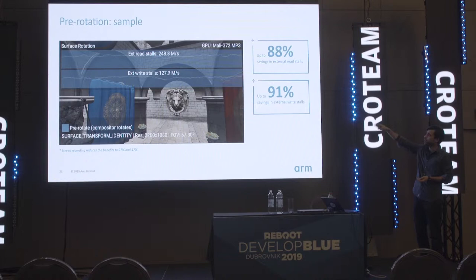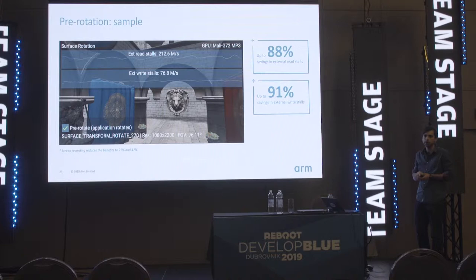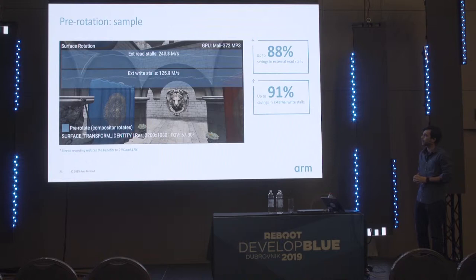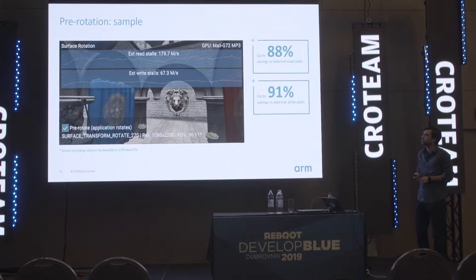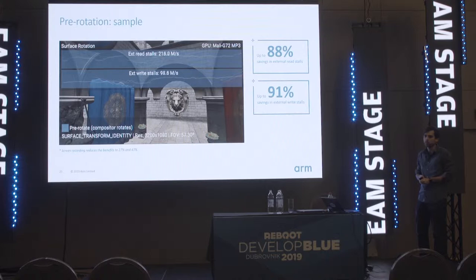At the top, we show the write and read stalls — cycles that the GPU is waiting for load-store operations because the memory bus is busy. On this particular device, there is a separate block handling the rotations and making use of the memory bus. These benefits are not as visible in this video because the screen recording application is also using memory, but on a live device we sometimes hit up to 90% reduction in memory bandwidth, which is good for battery life.